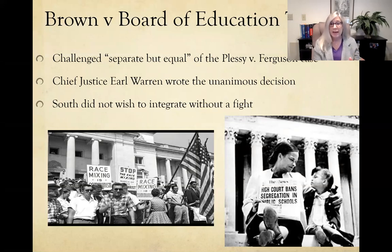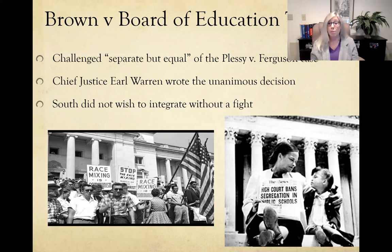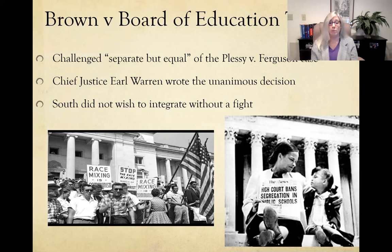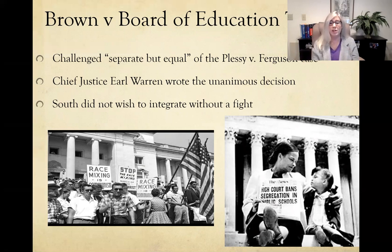We had seen prior to the New Deal a very conservative court that often struck down Roosevelt's programs as unconstitutional. Now in the 1950s, the balance of the court had tipped toward a liberal lean, and Earl Warren represented that — he had previously been governor of California. He wrote a unanimous decision — not a split decision — that separate but equal is not acceptable and does not meet the standard of the law.